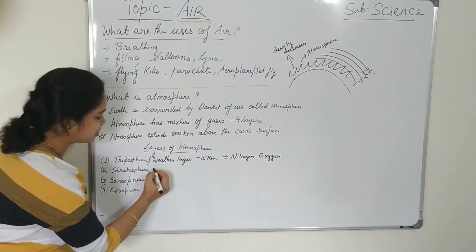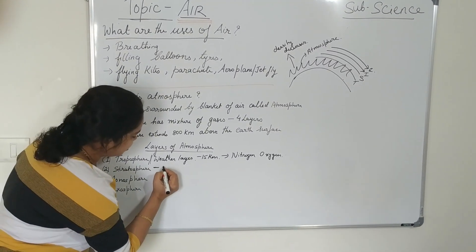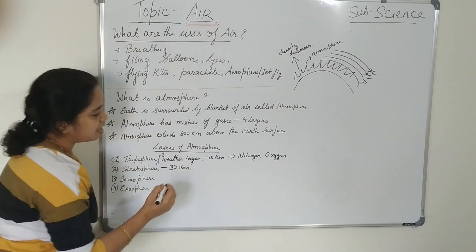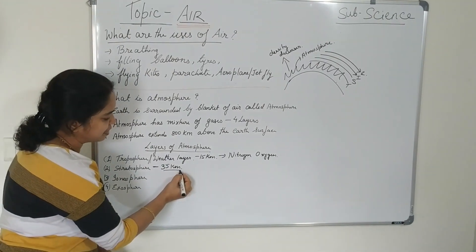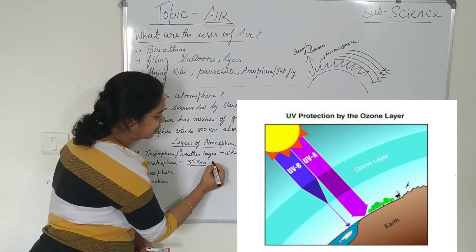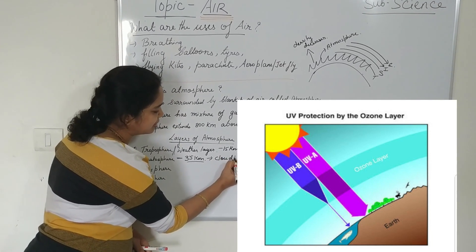Next is the second layer is the stratosphere. The stratosphere, it extends up to 35 kilometers after the troposphere. It extends 35 kilometers. And it is the cloudless layer. No cloud formation takes place over here. It is the cloudless layer.